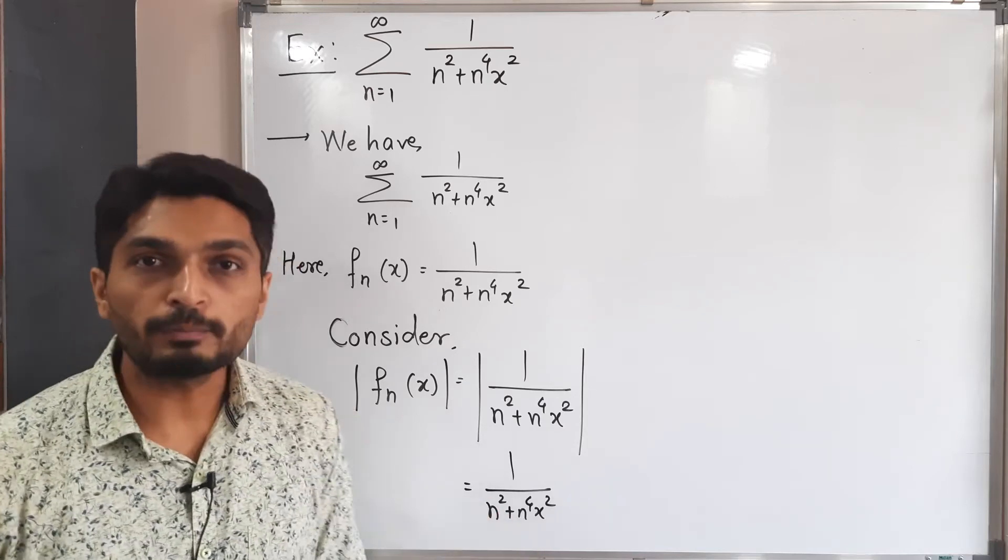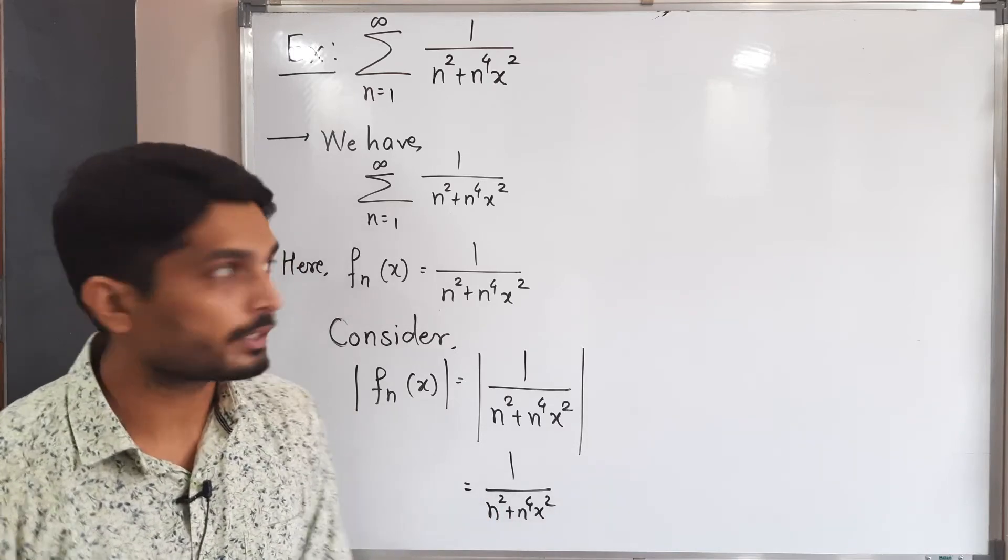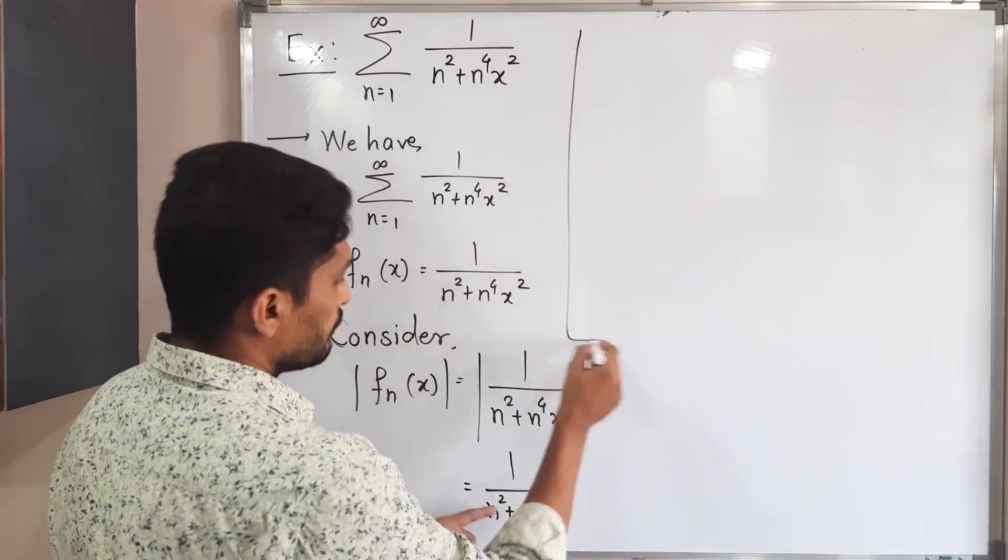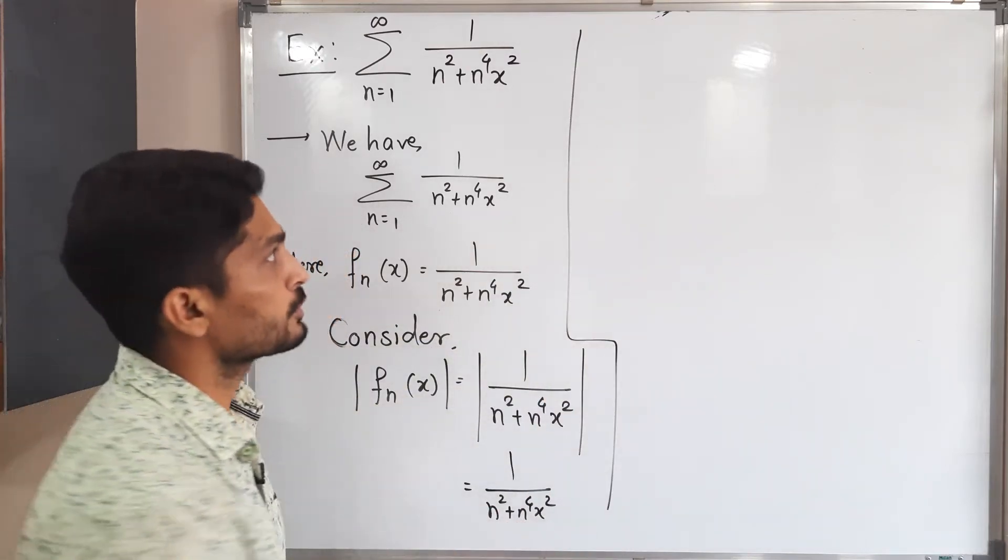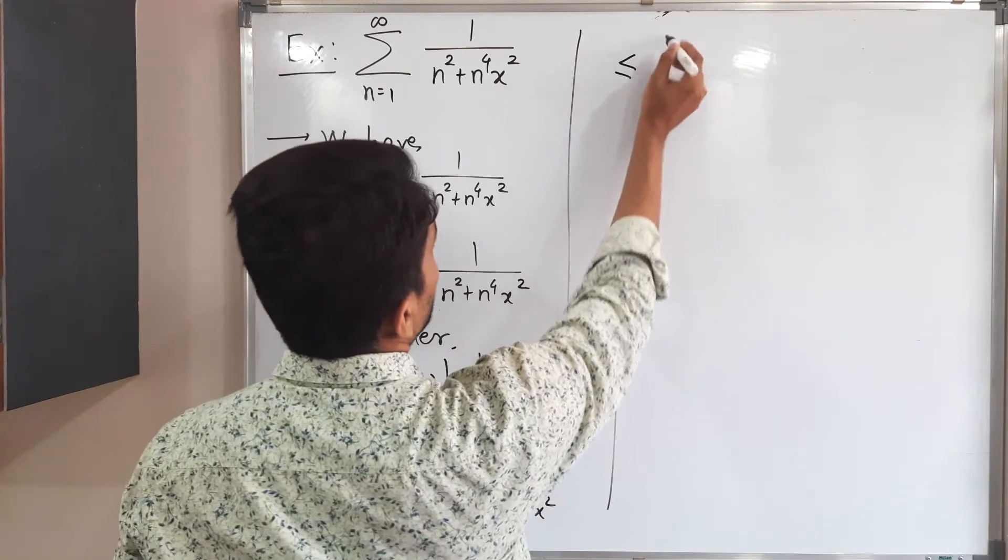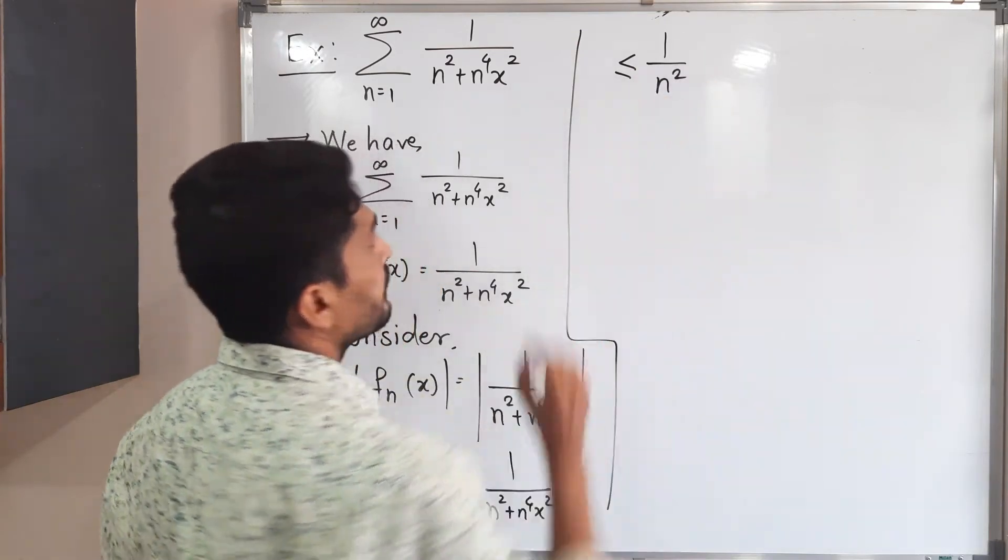So if you reduce the denominator then value will get increased. So that's why if you remove this n raised to 4 x square, possibly value will get increased. So this is less than or equal to 1 upon n square.